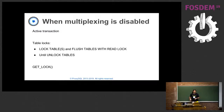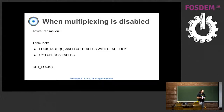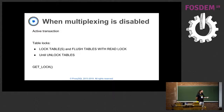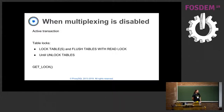There are certain criteria that automatically disable multiplexing. For example, if there is an active transaction, the connection cannot be shared until the transaction is completed. Or if there is some table lock - if you have executed LOCK TABLE or FLUSH TABLE WITH READ LOCK - that connection cannot be shared again until UNLOCK TABLE is executed.